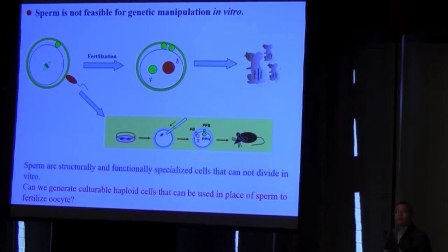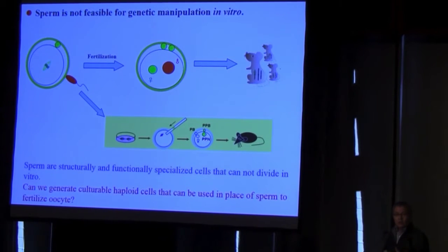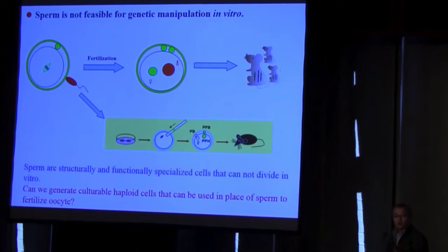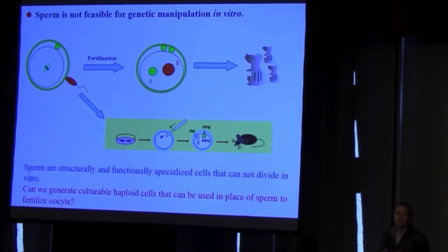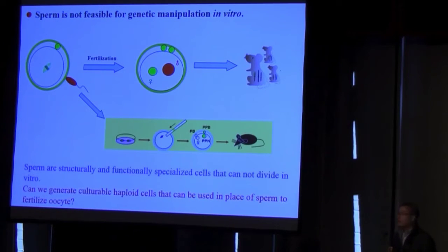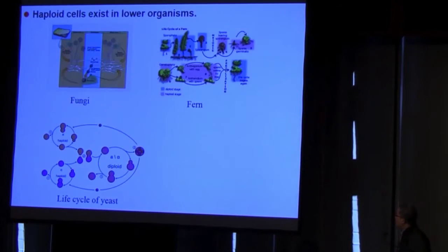Therefore, we asked whether we can generate a haploid cell line that can be used in place of sperm to produce animals. If yes, we may do gene modification in these cultured cells in vitro, then by injection of these cells into oocytes, produce gene-modified animals in one step. So the next question is how to derive haploid cells.